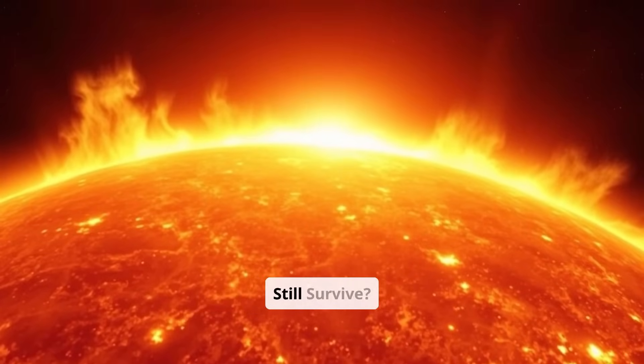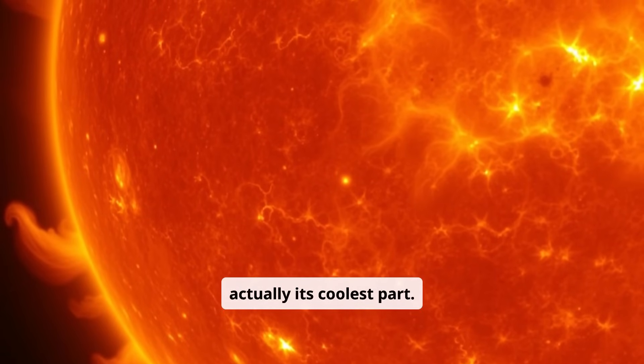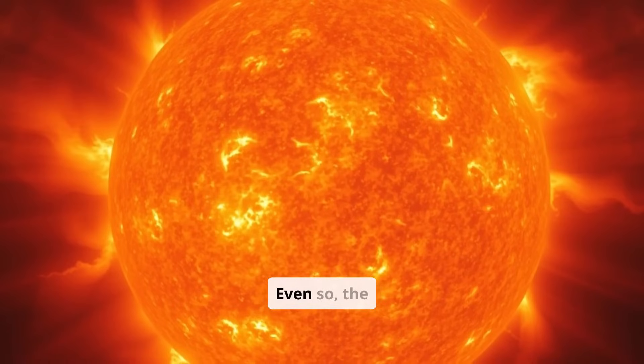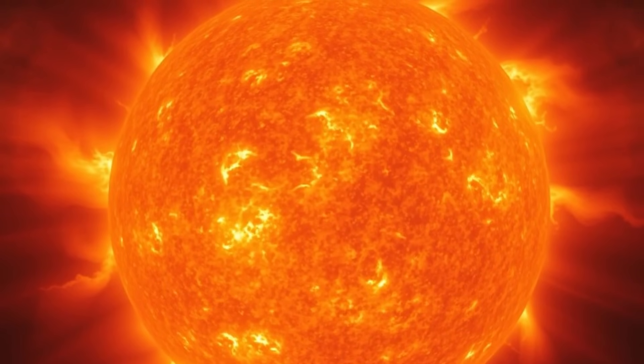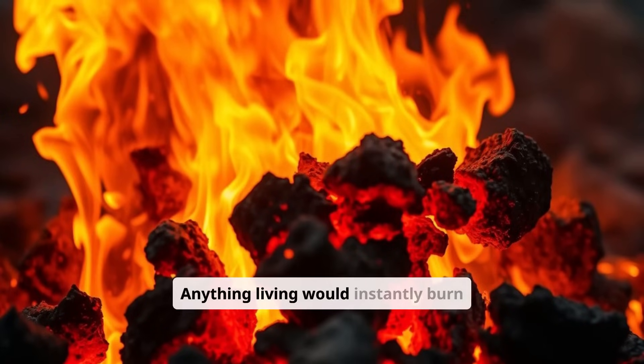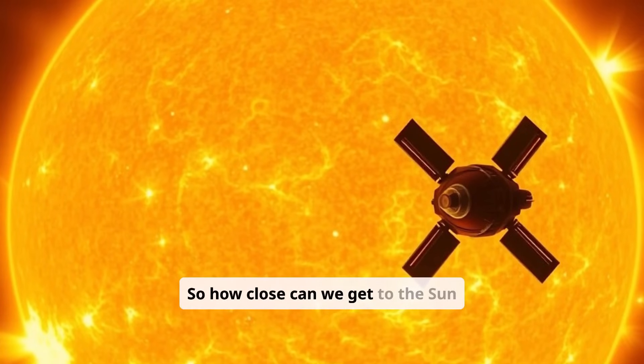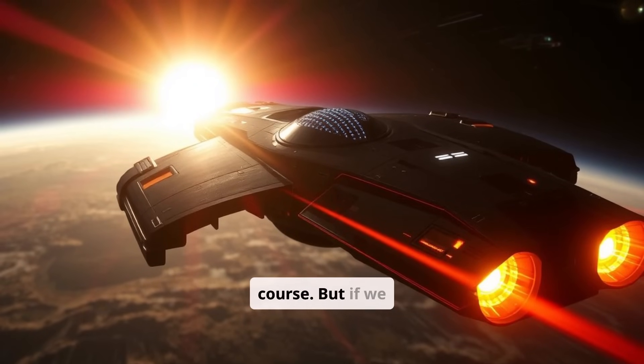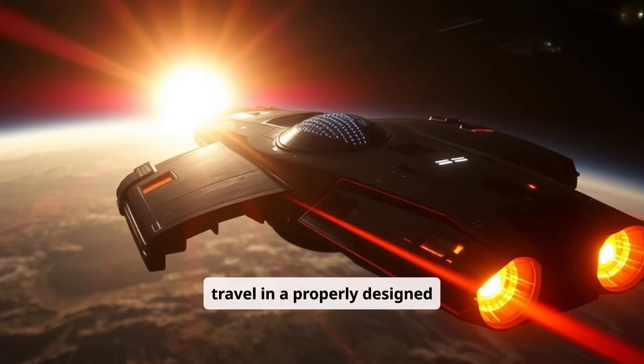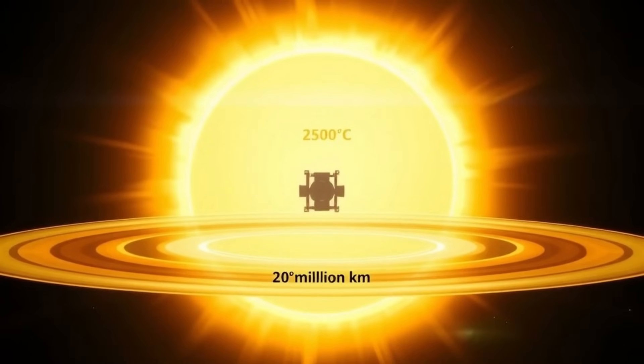How close to the sun could we still survive? The surface of the sun is actually its coolest part. Even so, the temperature there reaches about 6000 degrees Celsius. Anything living would instantly burn to ash. So how close can we get to the sun without that happening? We're not going to walk there, of course. But if we travel in a properly designed spacecraft, it should withstand temperatures of around 2500 degrees Celsius.